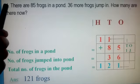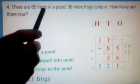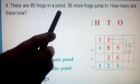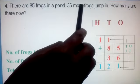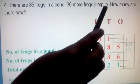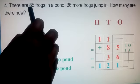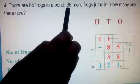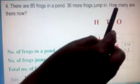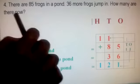You have the fourth sum. There are 85 frogs in a pond. 36 more frogs jump in. What is it? Already 85 frogs are there in the pond, 36 more frogs are jumping into it. How many are there now?